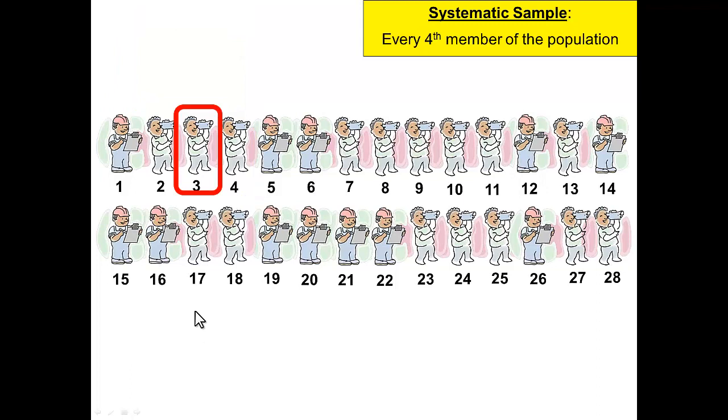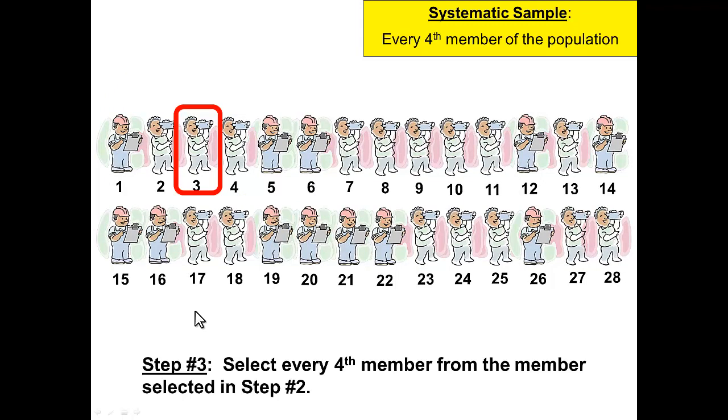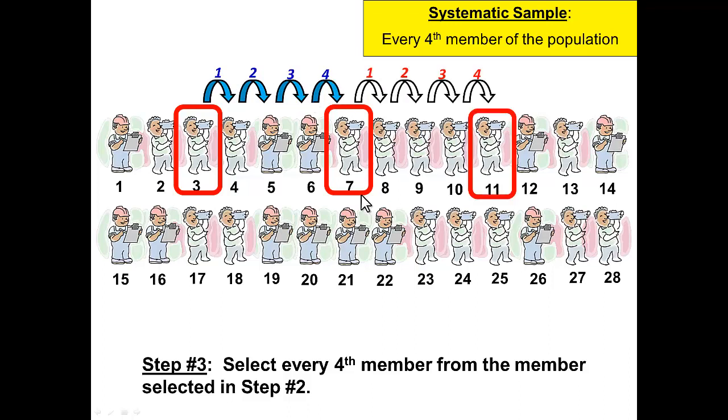Step number three. Select every fourth member from the member that we have selected in step number two. This is our member, so we want to count every fourth member from this person. 1, 2, 3, 4, and select person number seven. Count four jumps again. 1, 2, 3, 4 people from our population and select the 11th person.